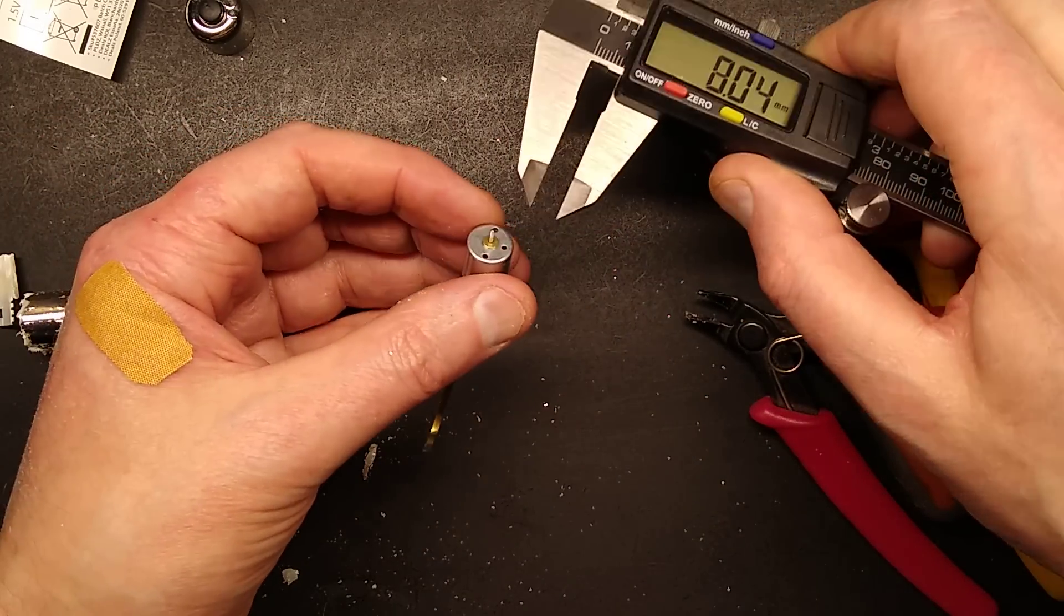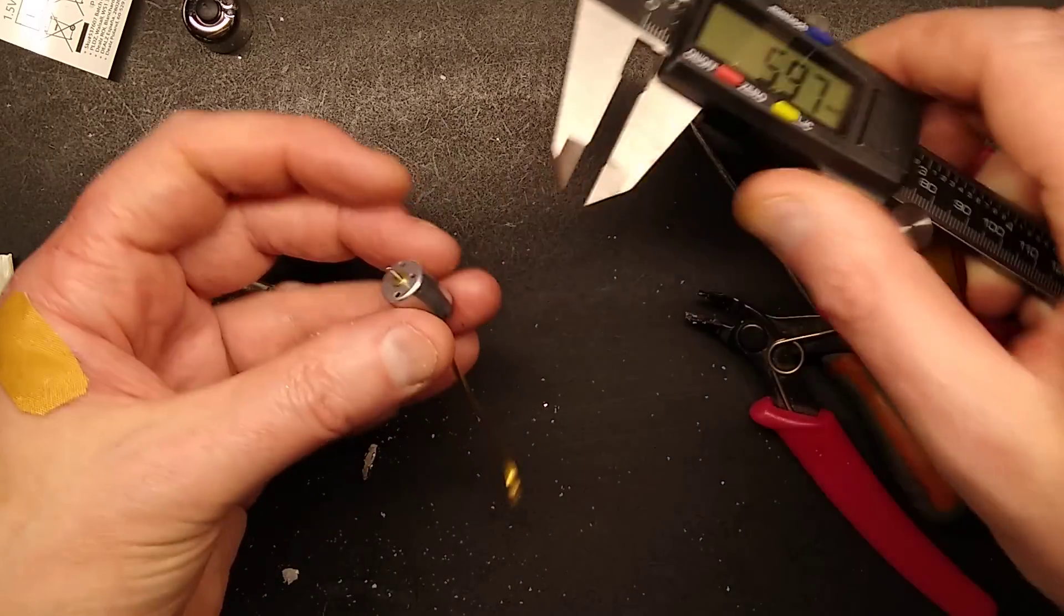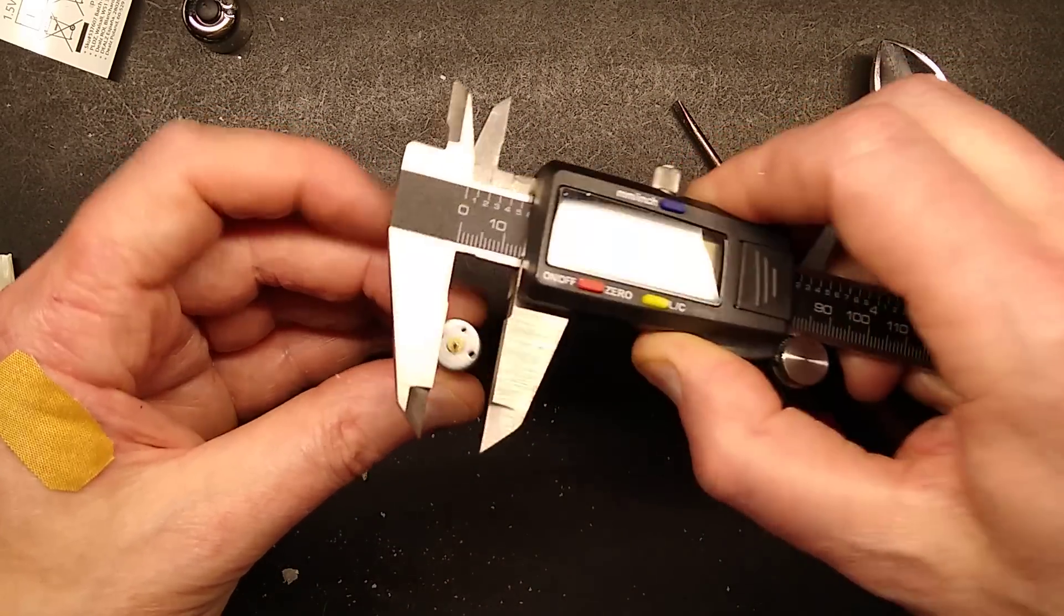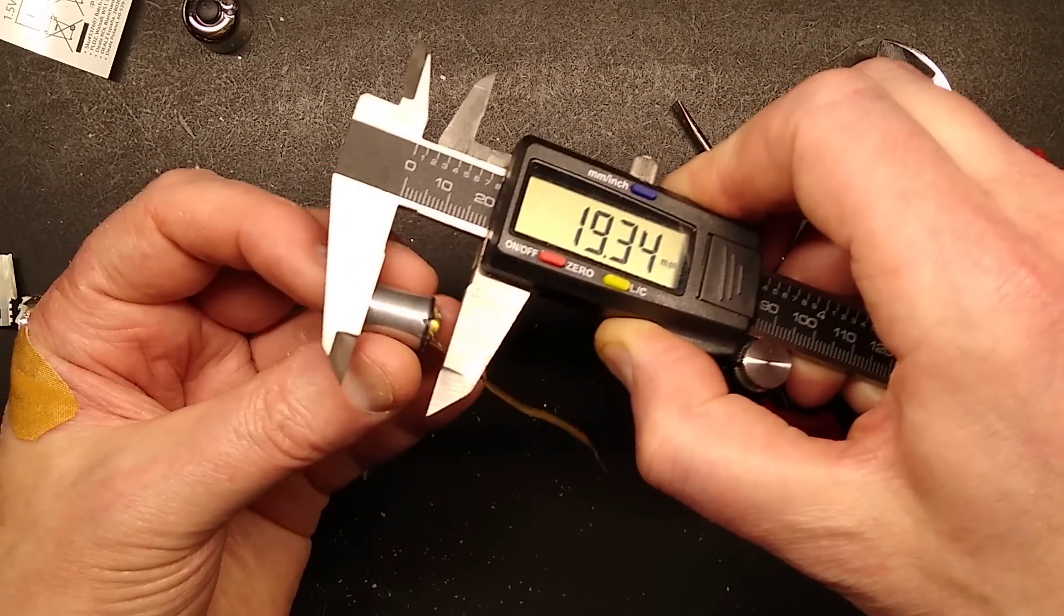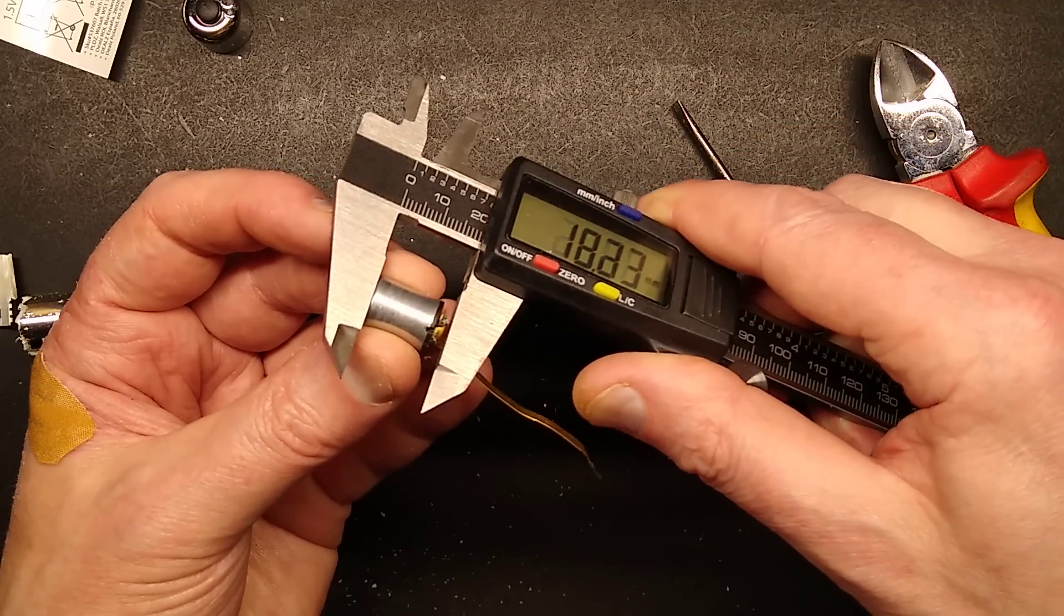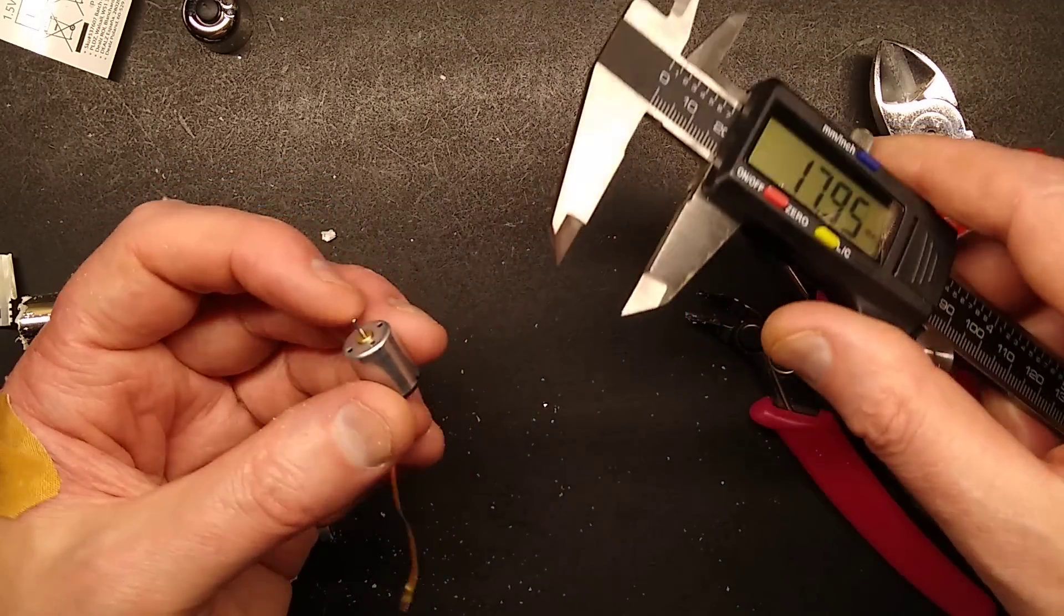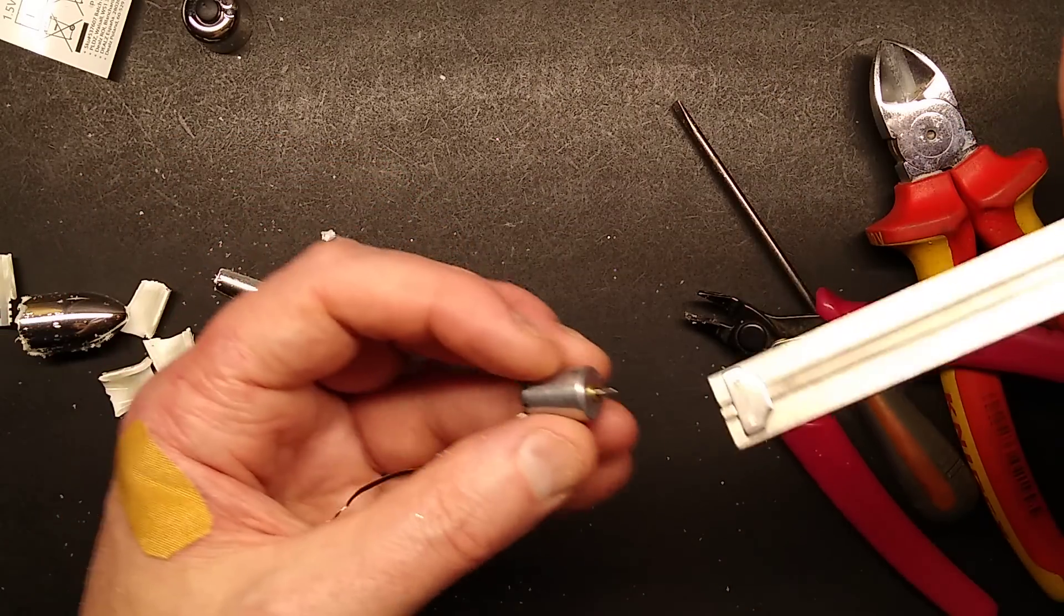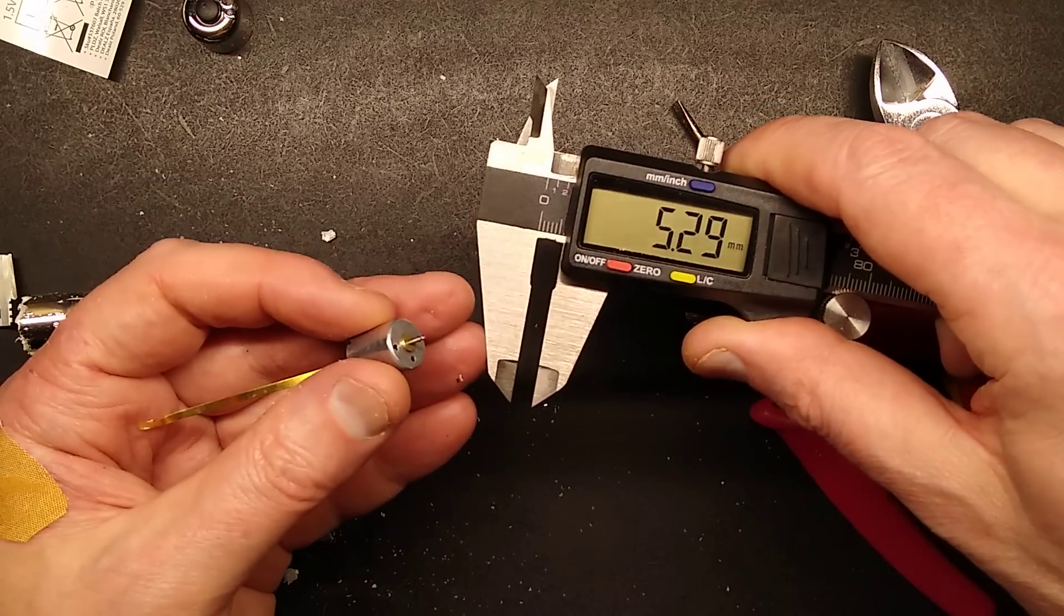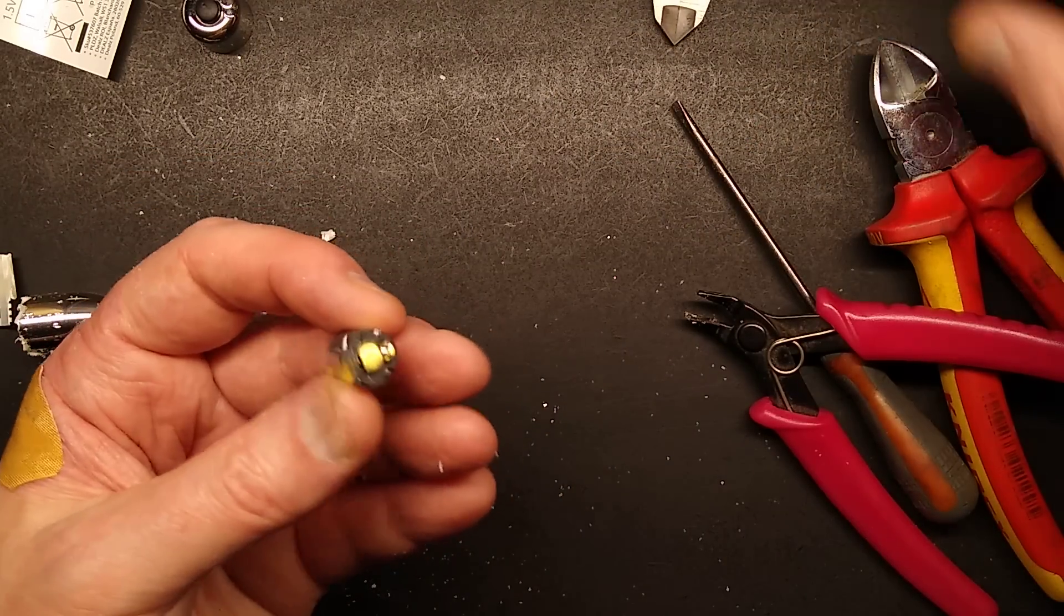The dimensions are: the shaft is 1 millimeter diameter, the body is approximately 12 millimeters diameter, and the length of the motor minus the shaft is approximately 18 millimeters long. The shaft itself is approximately 5 millimeters long.